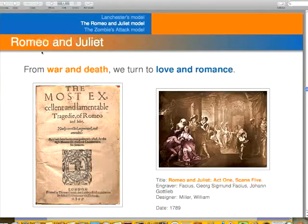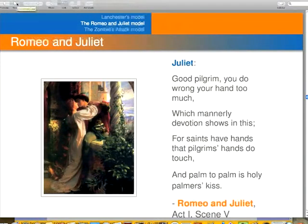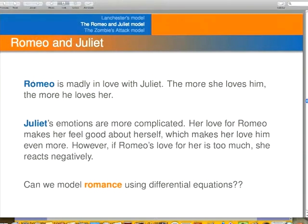Let's move on. There was war. Let's move on to love, Romeo and Juliet. Here's Romeo saying wonderful things to Juliet. And then Juliet is in love with Romeo too. Those are famous lines from the play by Shakespeare. So we see that Romeo is madly in love with Juliet. The more that she loves him, the more he loves her. But let's take Juliet's emotions a little more complicated. Romeo makes her feel good about herself, and that makes her love him more. But if Romeo's love comes on too strong, then she can react negatively.